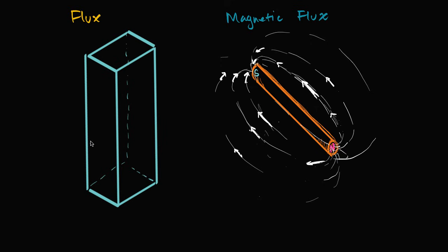When people are just talking about flux, the easiest way to conceptualize it is: how much of something is flowing through a surface in a given amount of time. So if you imagine I'm defining a volume of air right here, and the air is denser near the bottom of this volume, so there's more air down here than up here, which is generally true.